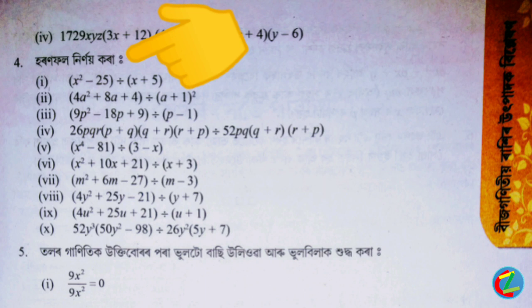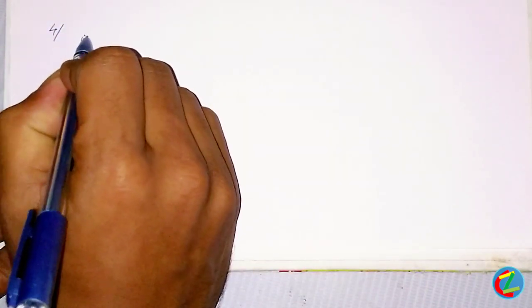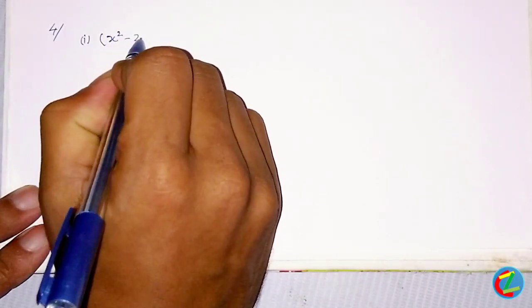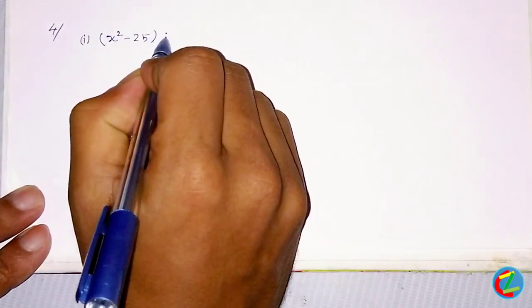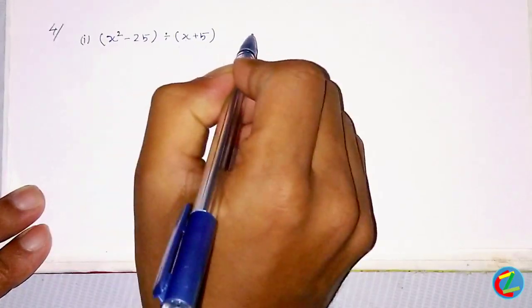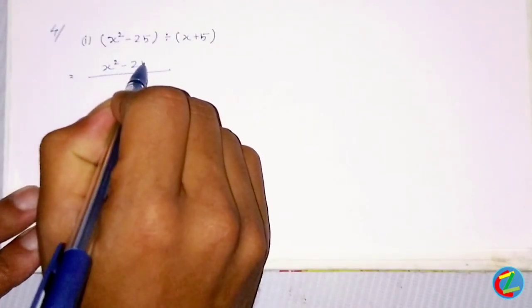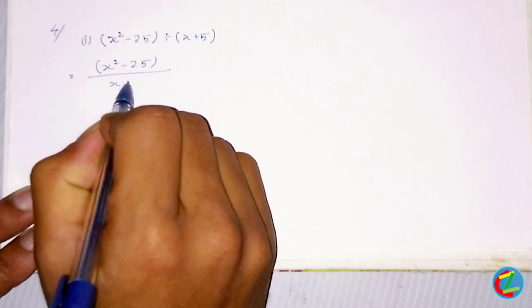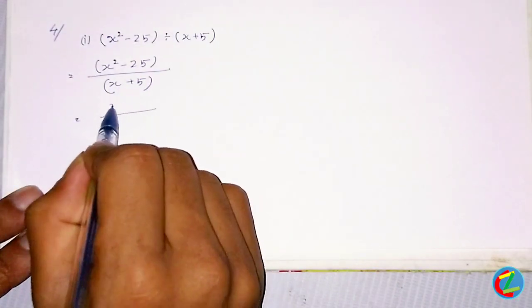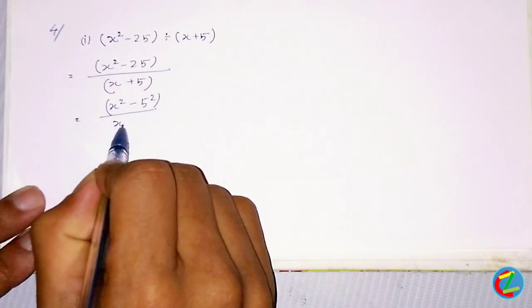We will discuss the Class 8 Math book exercise 14. The equation is x squared minus 25, and x squared minus 25 divided by x plus 5.